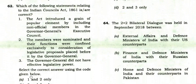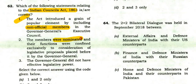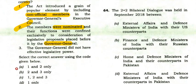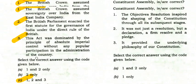Which statements relating to the Indian Councils Act 1861 are correct? The act introduced a popular element by including non-official members in the Governor General's executive council — true. Members were nominated and their functions confined to legislative proposals — true. The Governor General did not have effective legislative power — false, he had the power of veto. So options 1 and 2 are right.